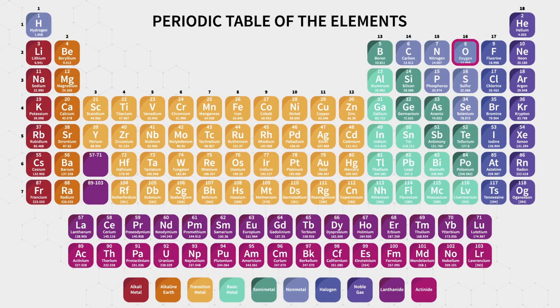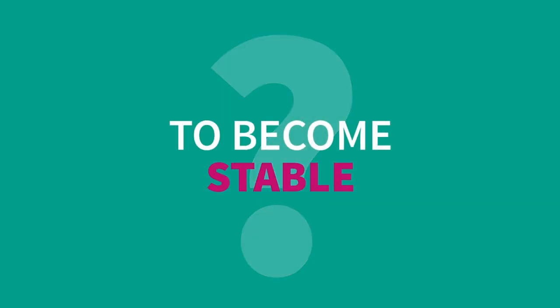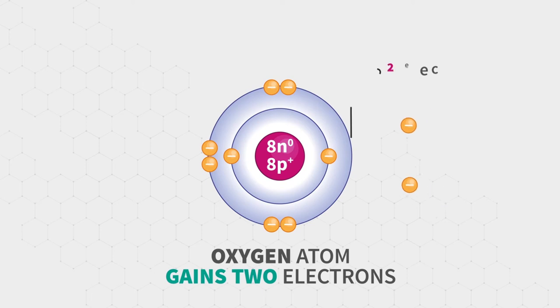Let us take another example. The oxygen atom. It has six electrons in its outermost shell. What should it do to become stable? To become stable it tends to gain two electrons.